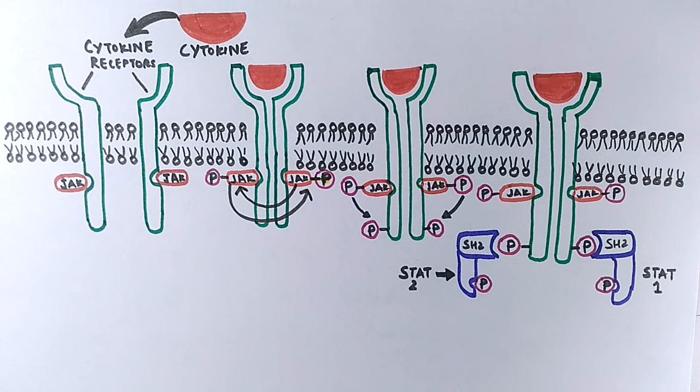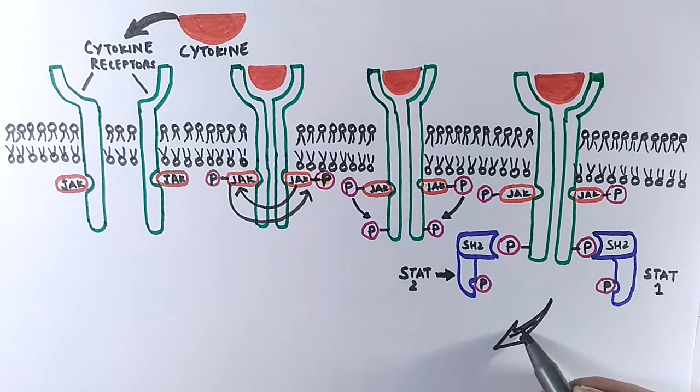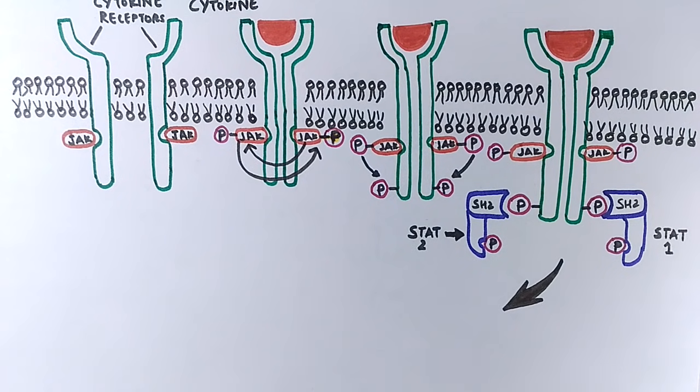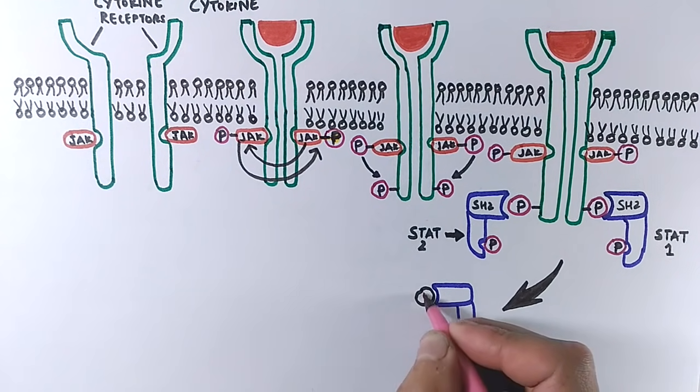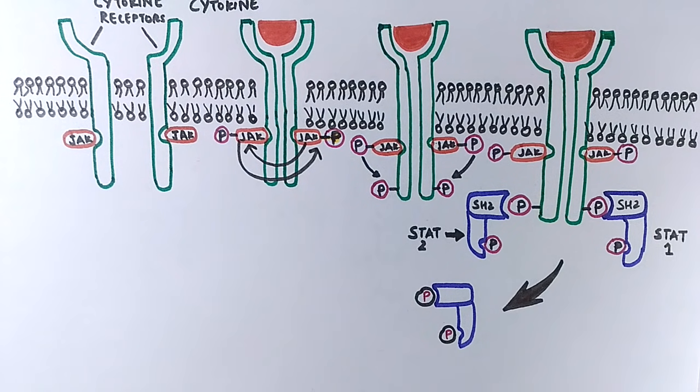After STATs dock on specific phosphotyrosine on the receptor, the JAK phosphorylates them as shown in the diagram. Then phosphorylation of STAT proteins causes the STATs to dissociate from the receptor. The phosphorylation detaches STAT protein from the phosphotyrosine.